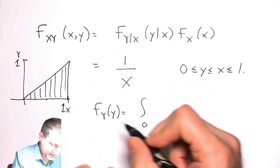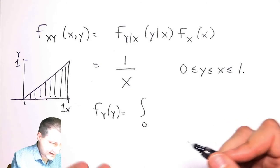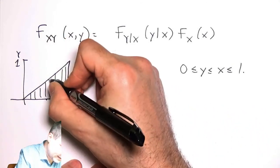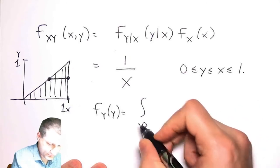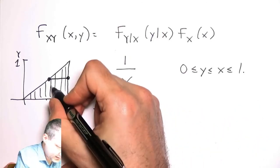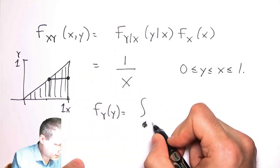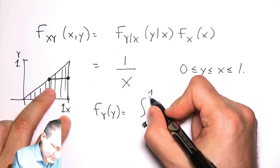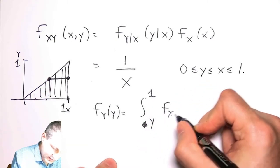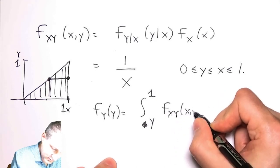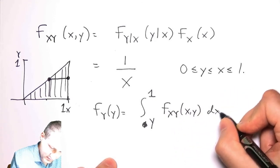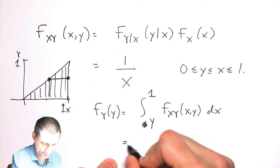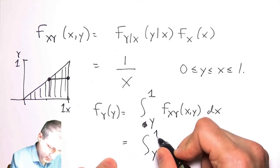Now if I want to get the PDF of Y, the marginal, I would integrate out the X variable, which means saying for a given value of Y, I'd make this integral. So what are my limits going to be? It's like saying I tell you what Y is and I go from Y to 1 of this joint thing dX.